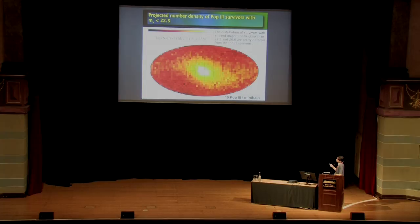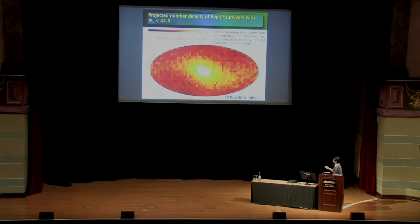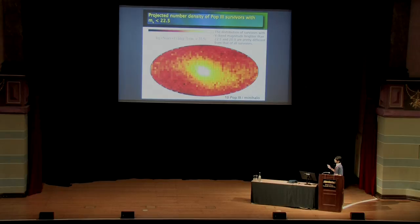However, if we limit the V-band apparent magnitude, the distribution differs from that of all survivors. This map shows survivors with V-band magnitude brighter than 22.5 and 20.20. This is very different from the all-survivor distribution. The concentration on subhalos becomes invisible simply because subhalos are far from the observer, so even bright survivors in subhalos have faint apparent magnitudes.